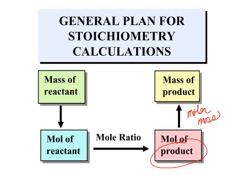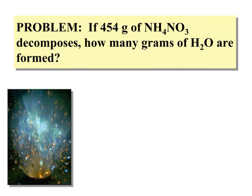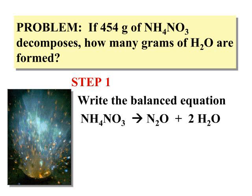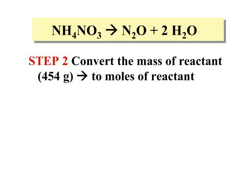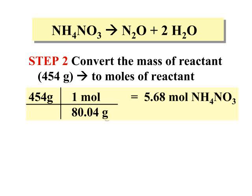Stoichiometry problems in general always follow this plan. So let's look at a reaction. If we have 454 grams of ammonium nitrate and it decomposes, we want to know how many grams of water are formed. The first thing you have to do is write a balanced equation to represent the reaction — without a balanced equation you cannot do stoichiometry calculations. You've got ammonium nitrate decomposing to form two products; the product we're interested in is water. Once you have your balanced equation, convert the mass of the reactant, ammonium nitrate, to moles: 454 grams divided by the molar mass of 80.04 grams per mole gives us moles of our starting reactant.